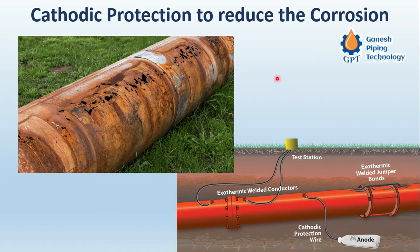Basically, cathodic protection is a system or arrangement to protect the pipe from corrosion. That is the first and most important application — to reduce corrosion. We can see here a pipe where corrosion has taken place, and we need to understand why this happens.